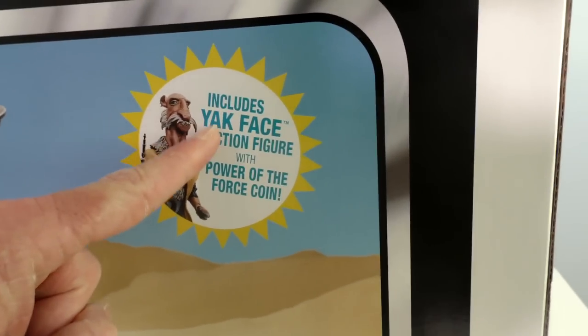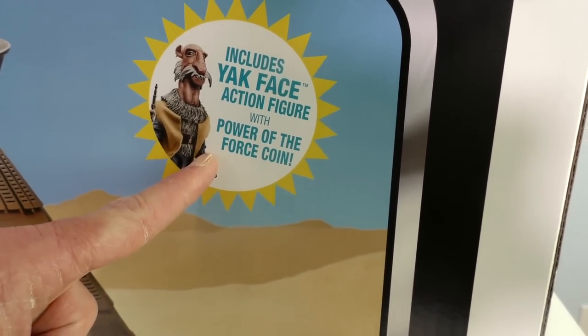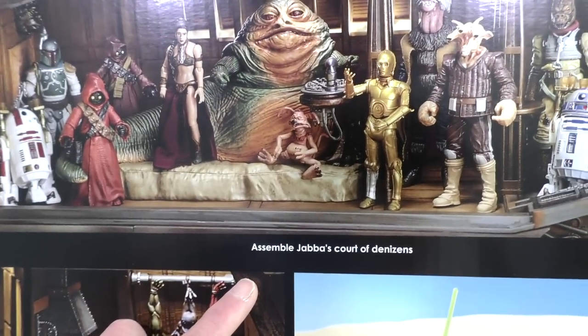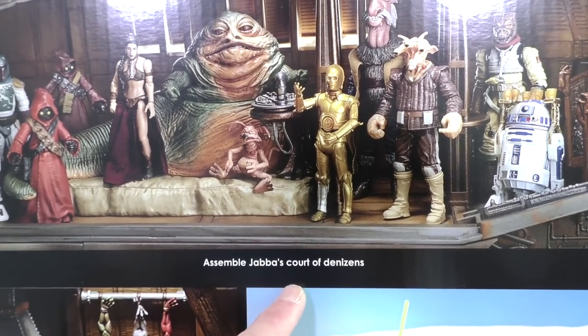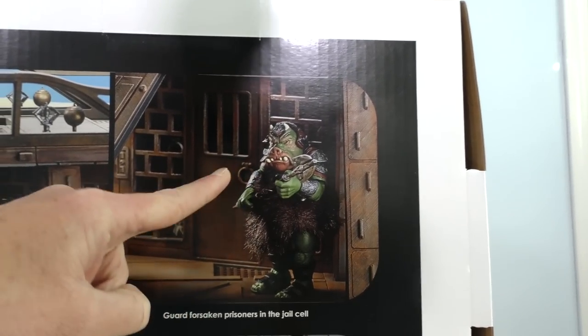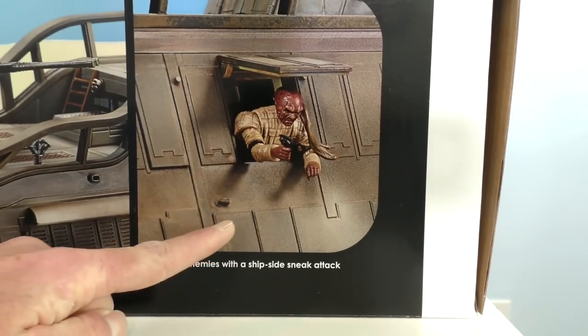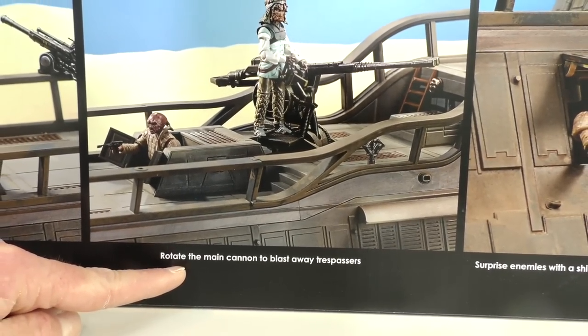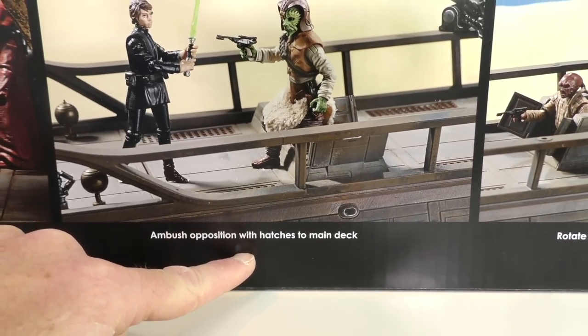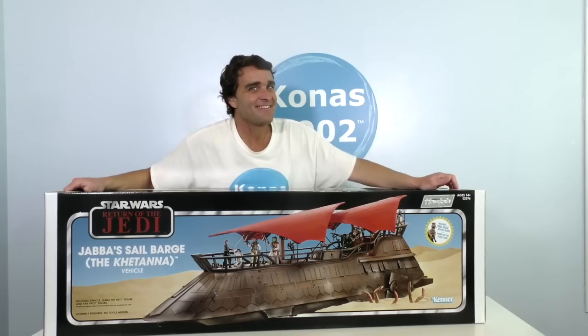And look at this. It even includes a Yak Face action figure with the power of the force coin. You could gaze upon the desert sands of Tatooine from the cockpit. Or assemble Jabba's court of denizens. There's even a jail that you could use your Gamorrean guards for to make sure that nobody escapes.